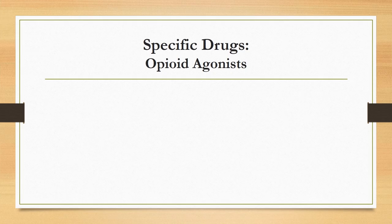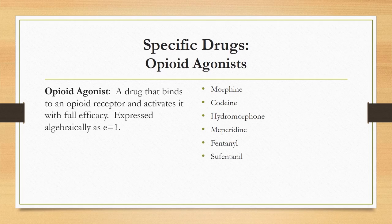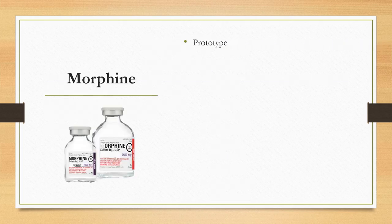Now we will discuss specific drugs seen in the PACU. Opioid agonists are one of the most highly ordered medications in the postoperative area — they bind to opioid receptors and activate them. Drugs to be discussed include morphine, codeine, hydromorphone, meperidine, fentanyl, sufentanil, alfentanil, remifentanil, and methadone. Morphine is the prototypical opioid analgesic, used for moderate to severe pain and administered via IM, IV, subcutaneous, oral, intrathecal, and epidural routes. With morphine, sedation occurs prior to analgesia — nurses must not consider morphine-induced sedation as an indication of adequate analgesia.